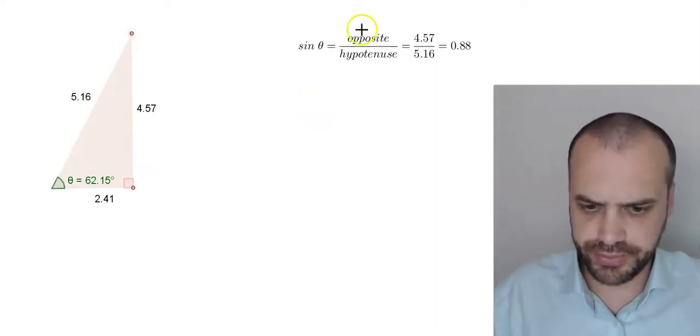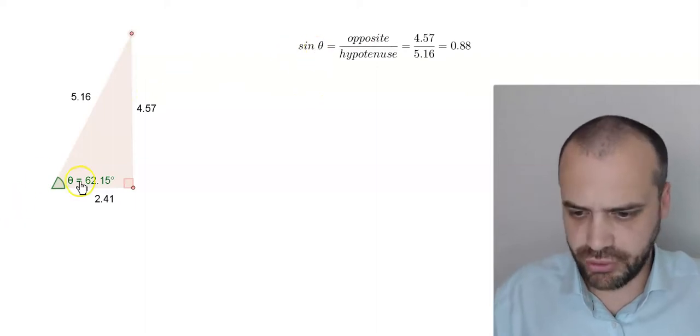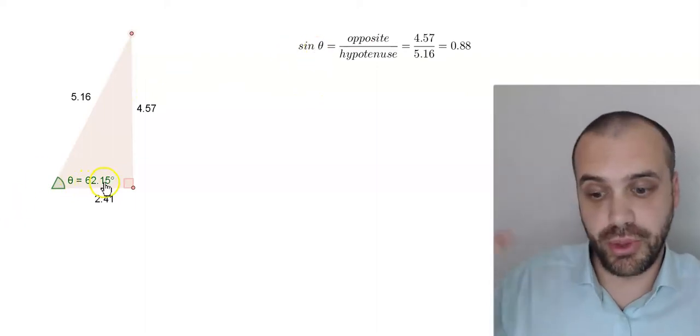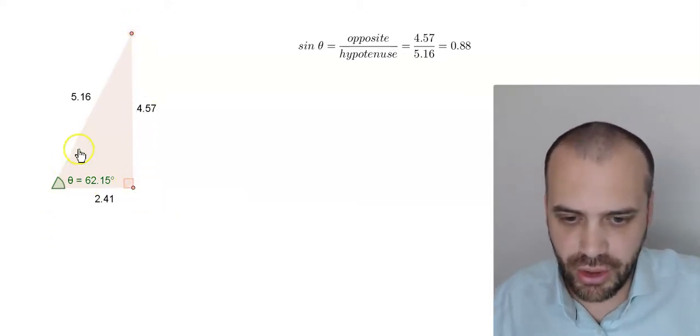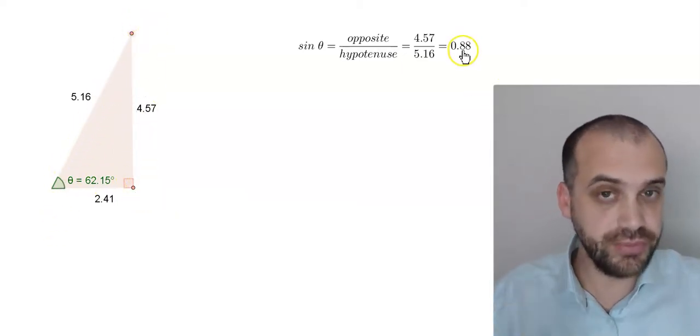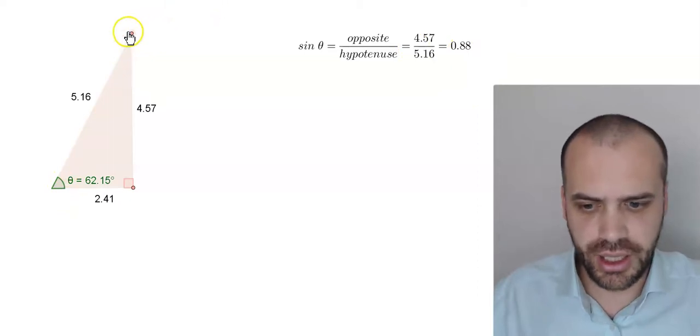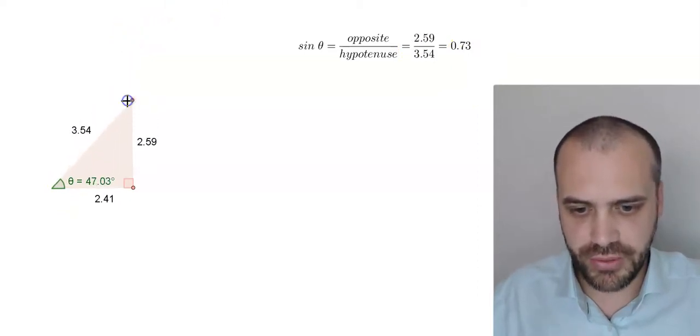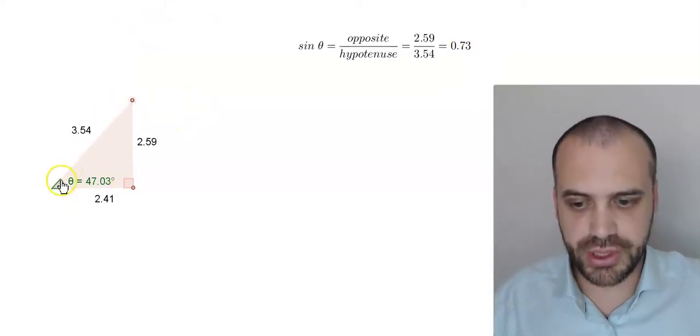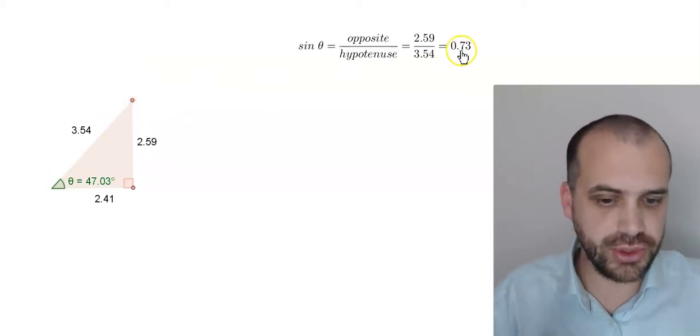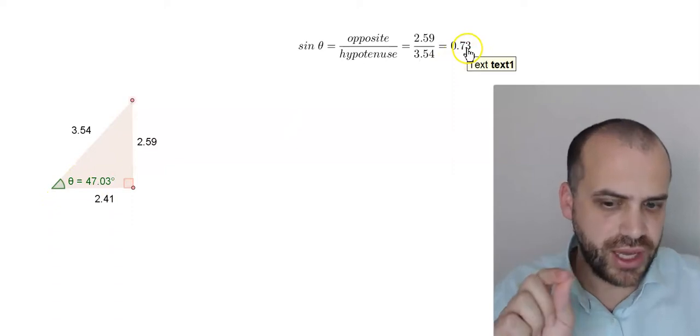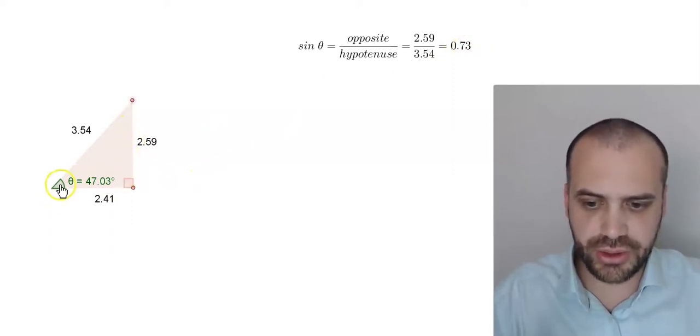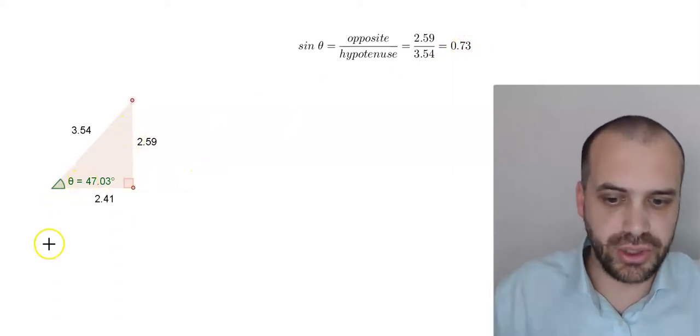And so we now know that if you have a triangle with an angle of 62.15, the ratio between the opposite side and the hypotenuse will be equal to 0.88. If you were to choose a different angle, the ratio of the opposite side to the hypotenuse is equal to 0.73. We have these values for every single sized angle that you can think of.